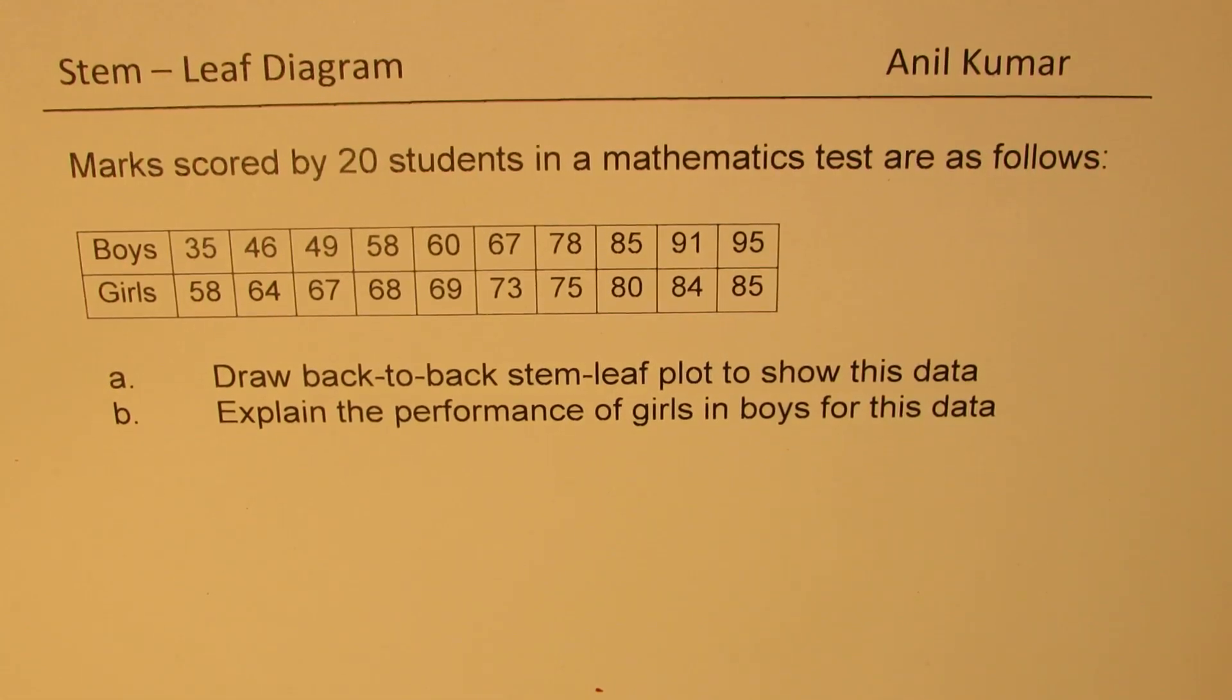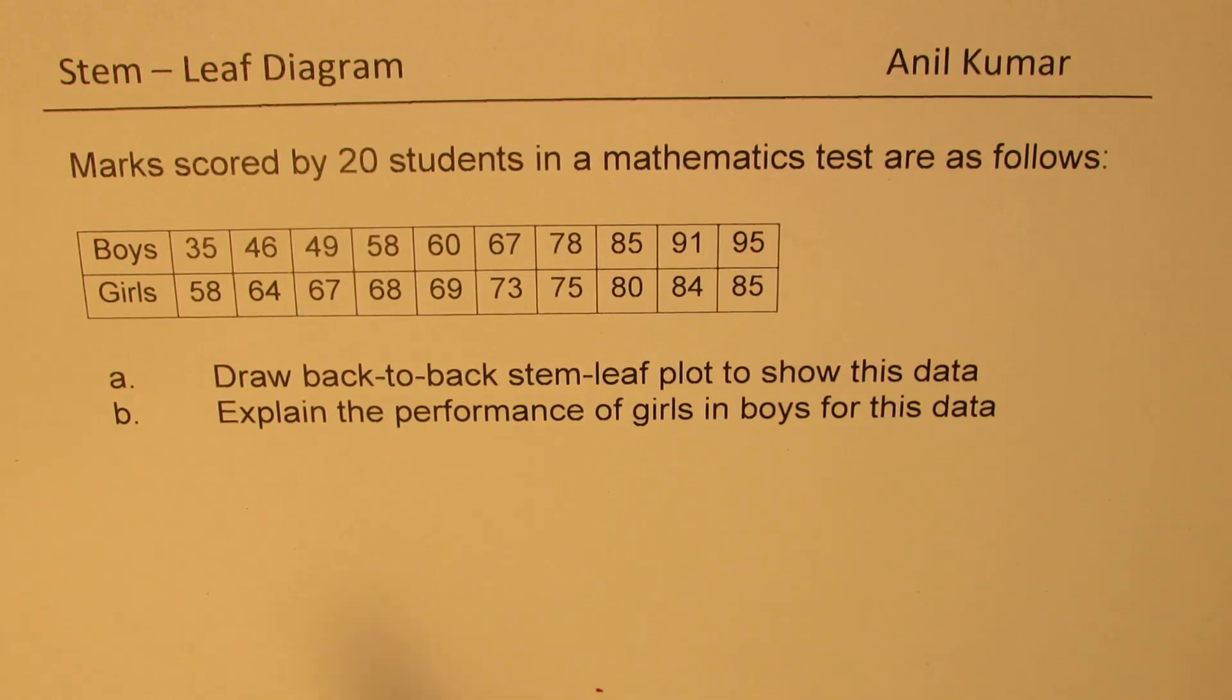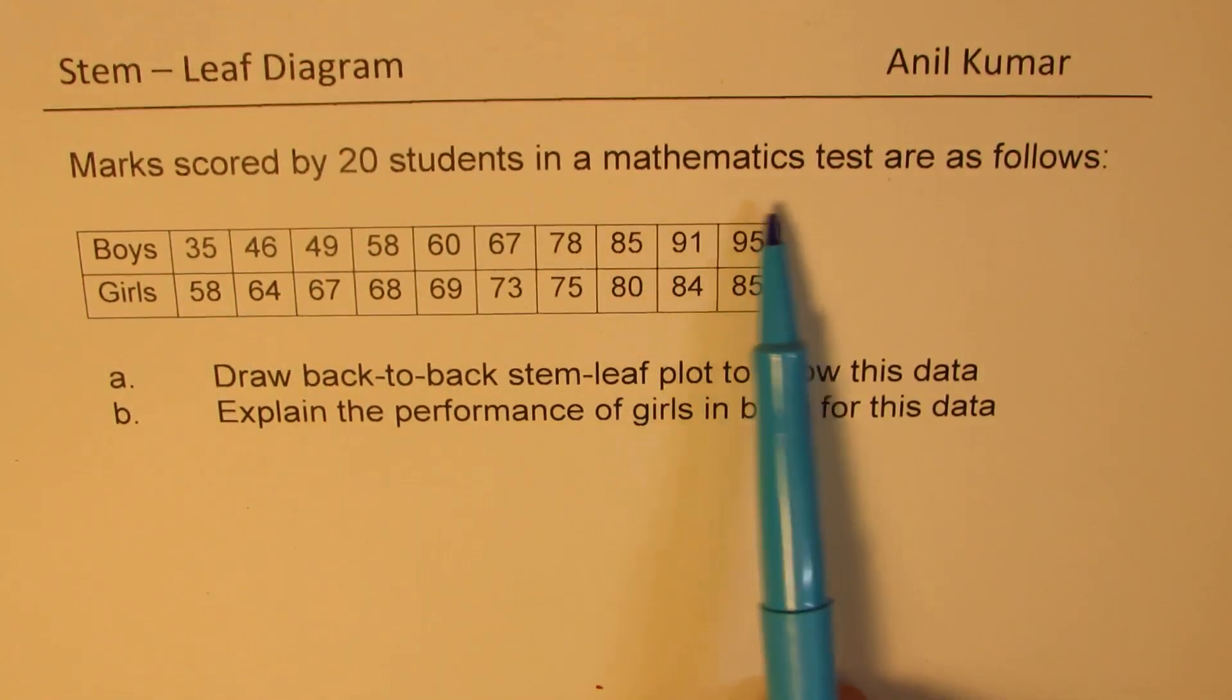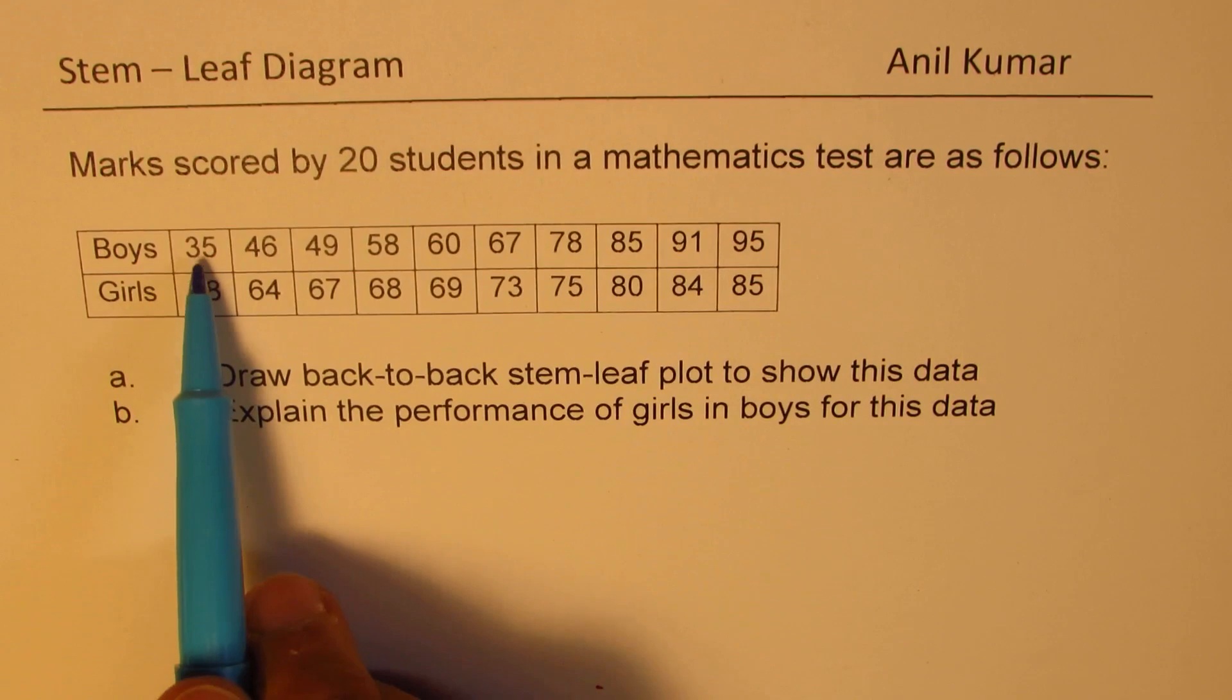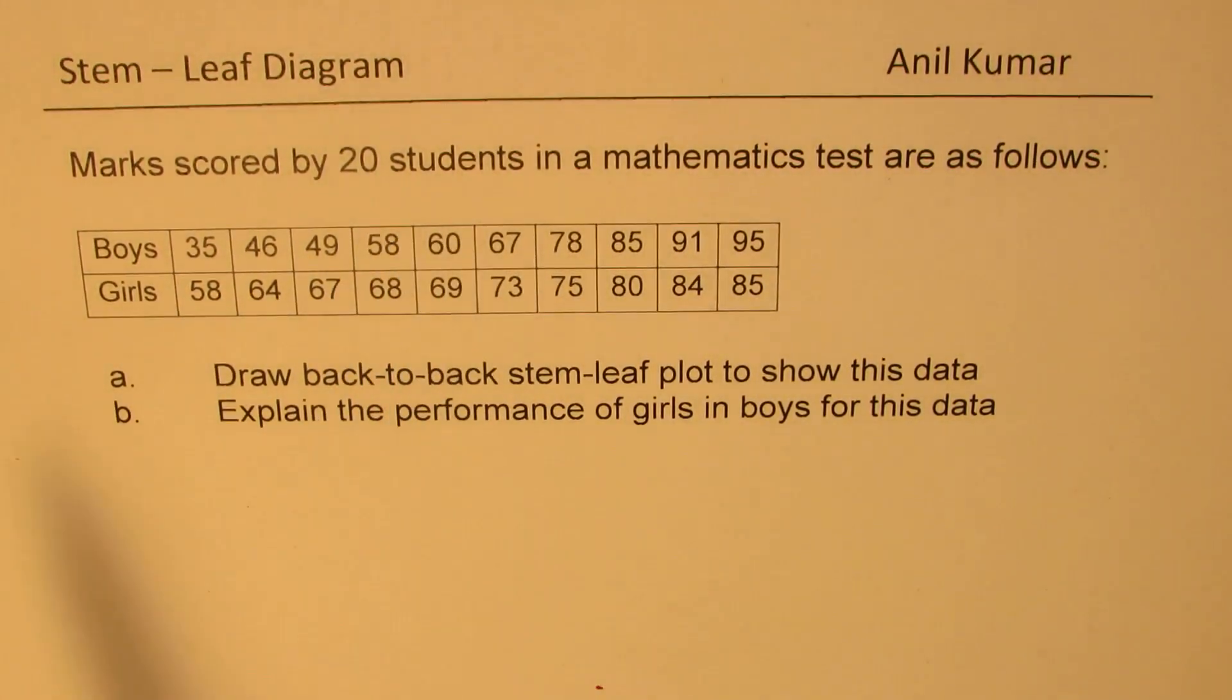I'm Anil Kumar. Welcome to my series on stem and leaf diagrams. The question here is: marks scored by 20 students in a mathematics test are as follows. So that is the data given to you. One set of marks for boys, another set of marks for girls. Total is 20 students, 10 boys and 10 girls in this particular case.